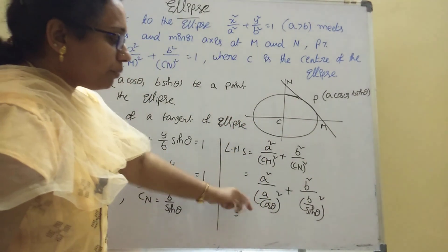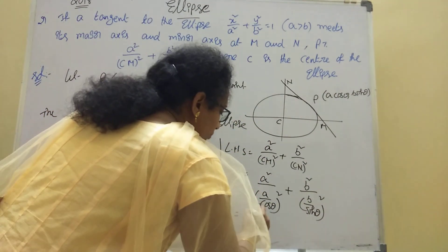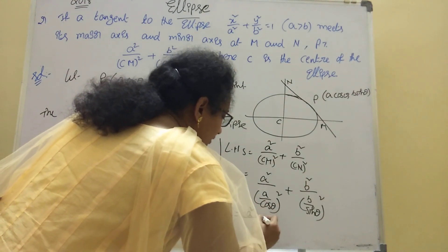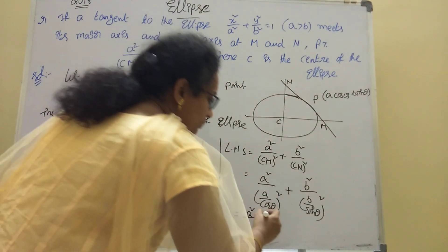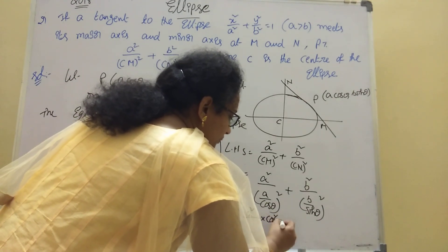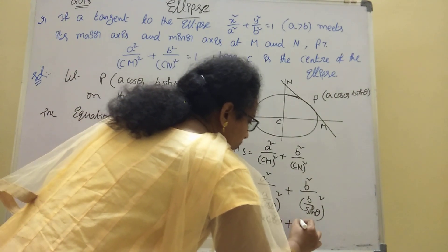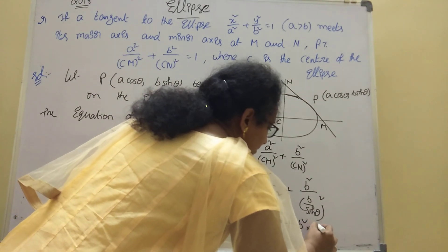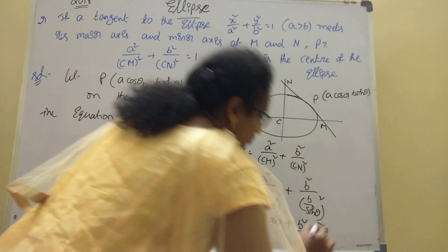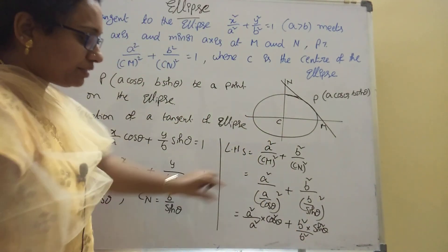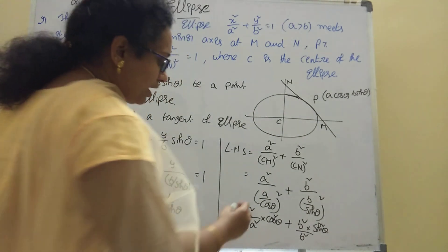So a²/CM² = cos²θ/a² × a² = cos²θ, and b²/CN² = sin²θ. Simplifying, a² and b² cancel respectively, giving cos²θ + sin²θ.